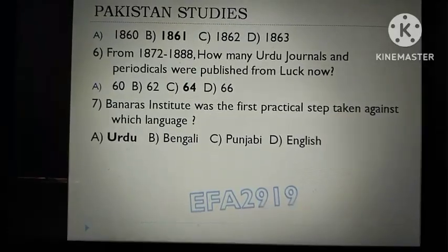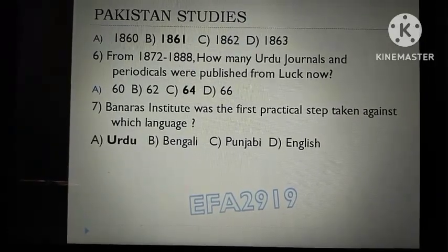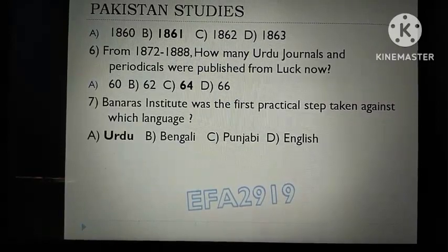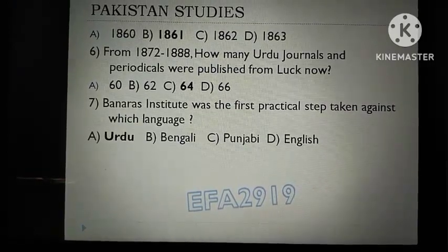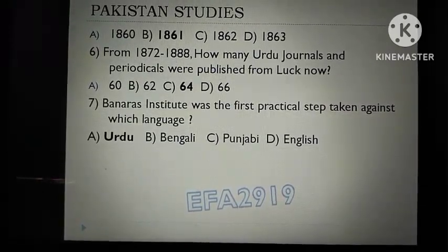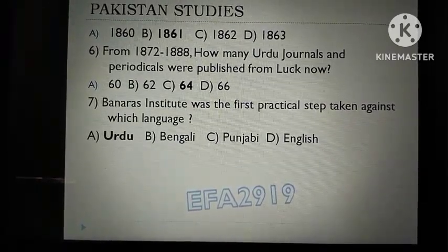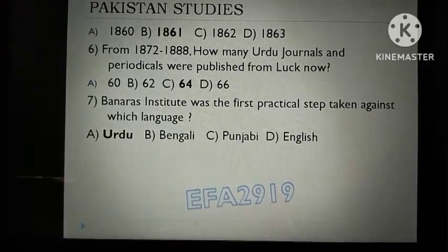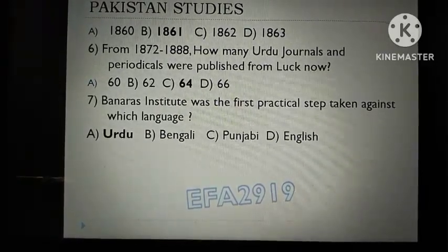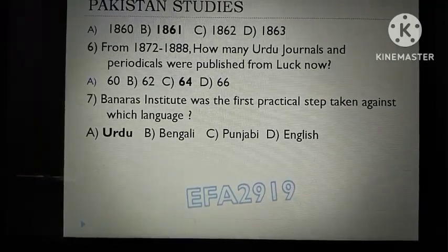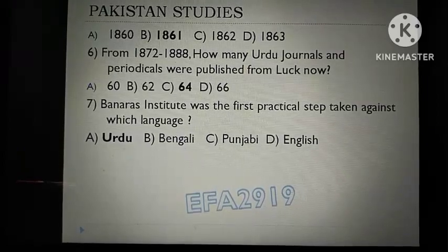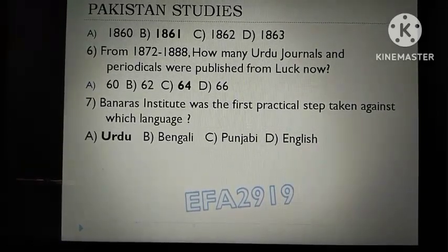1860, 1861, 1862, or 1863? The correct answer is 1861. From 1872 to 1888, how many Urdu journals and periodicals were published from Lucknow? 60, 62, 64, or 66? 64 is the correct answer.